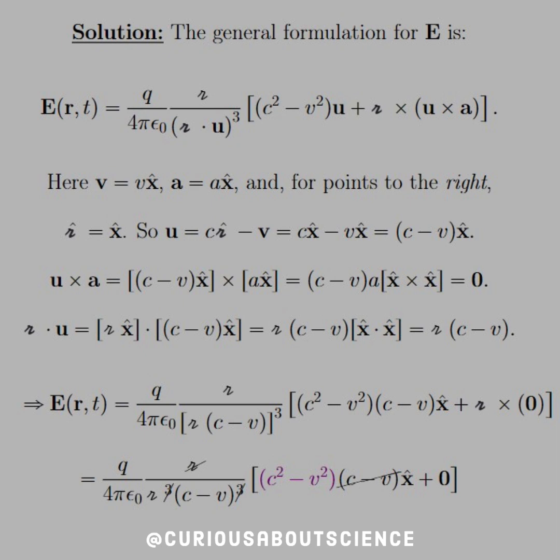So if we plug everything into this form, we're pretty good there, I would say. We have script R over script R (C minus V)³. And then we have C² minus V² times C minus V x-hat due to the u vector.